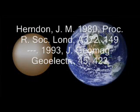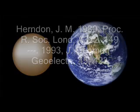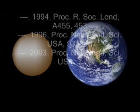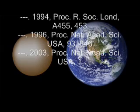Earth, as a close-to-star Jupiter-like gas giant, consists of more or less uniform, closed, concentric shells of matter, layered according to density.